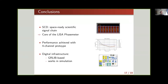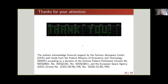In conclusion: the signal chain demonstrator is an intermediate milestone towards the flight phase meter. It already tests space-ready components and verifies the complete signal chain — the core of the LISA phase meter. We achieved performance requirements with the four-channel prototype on the analog side. On the digital side, we are developing the digital infrastructure based on the GRLIB from Cobham Gaisler, which already works in simulation. Further work is ongoing.